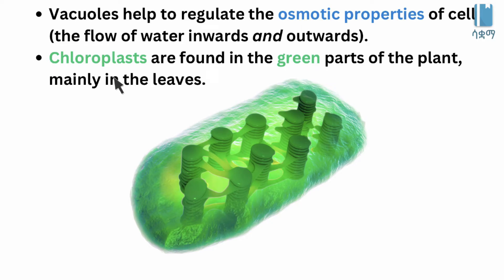Plant cells which contain chloroplasts are found in the green parts of the plants, mainly in the leaves.